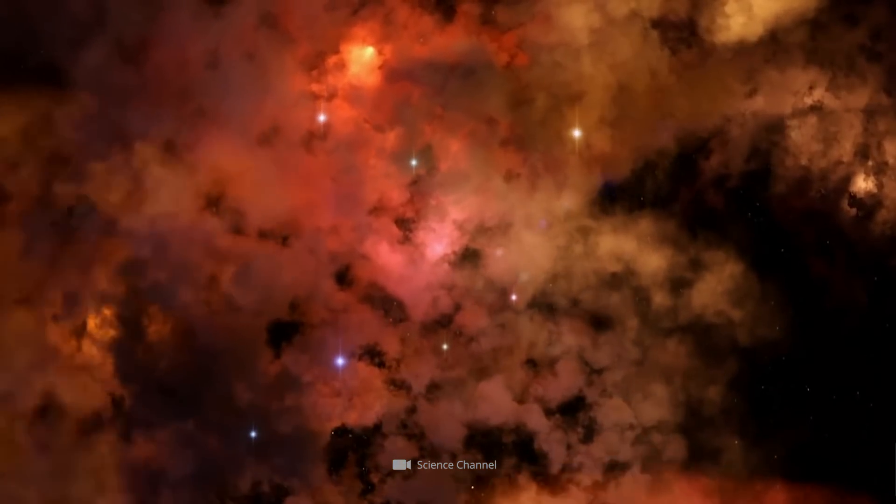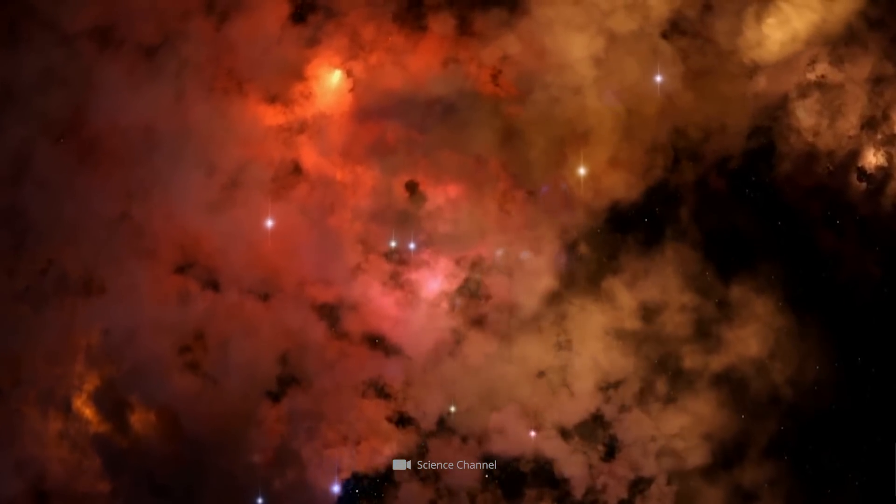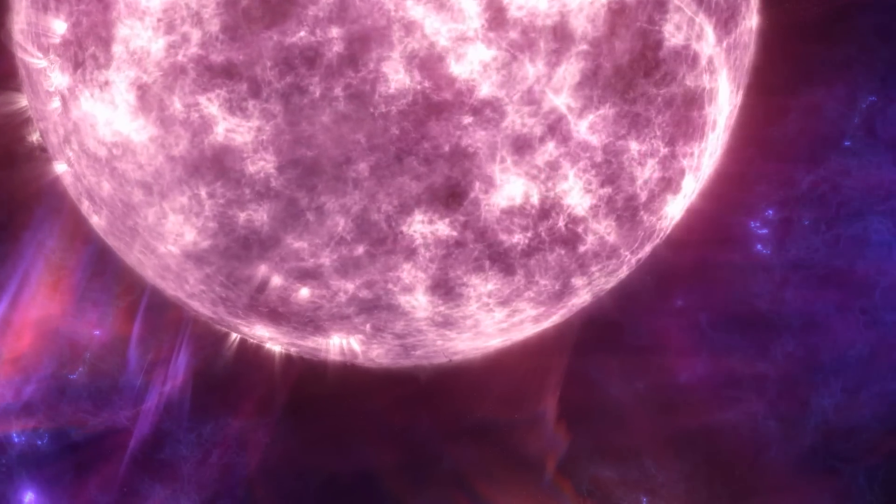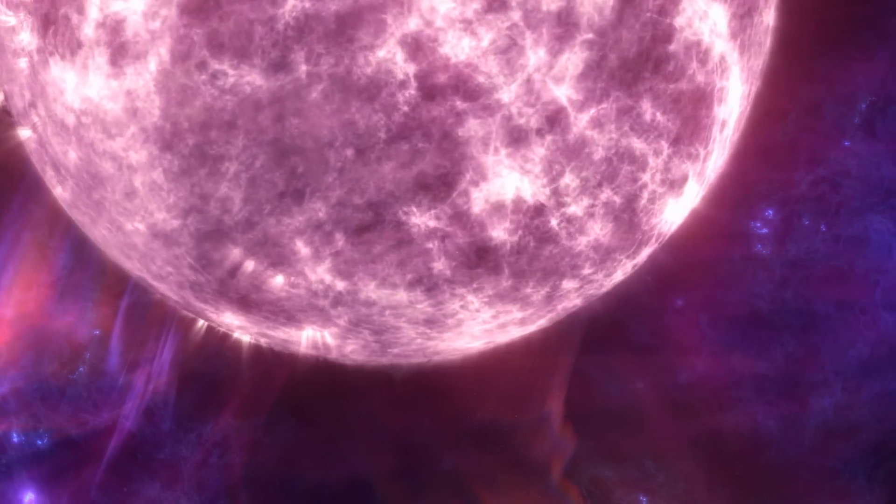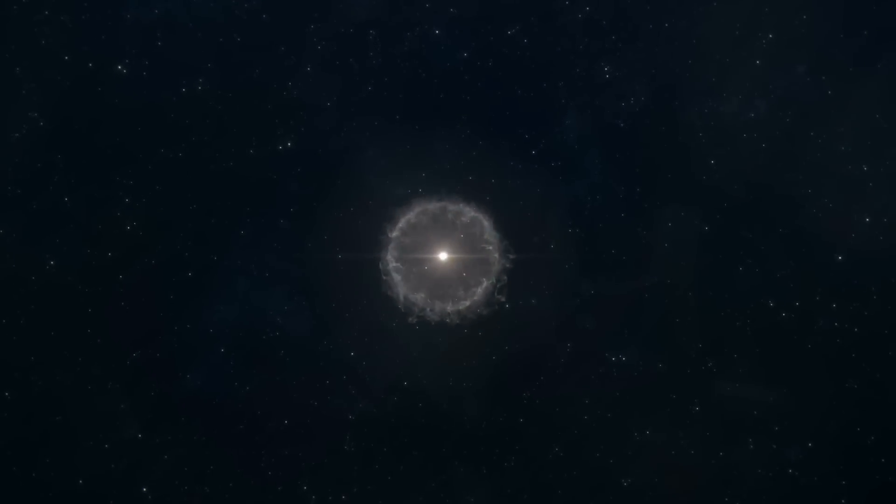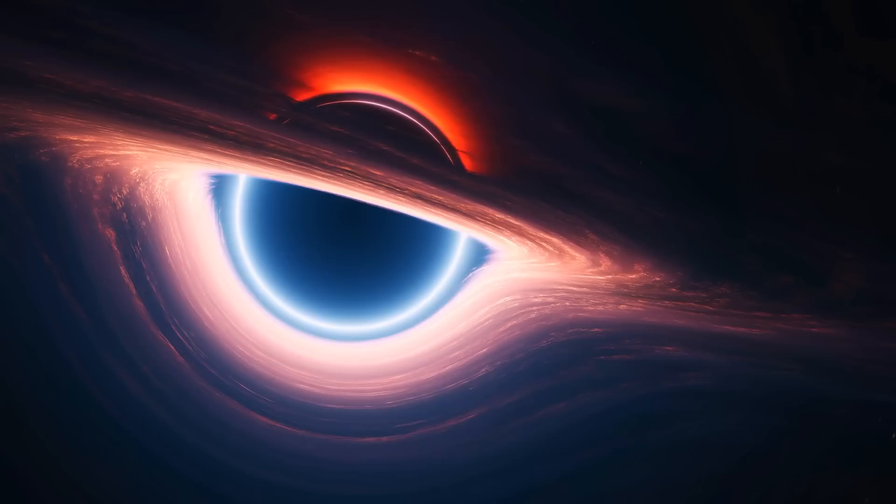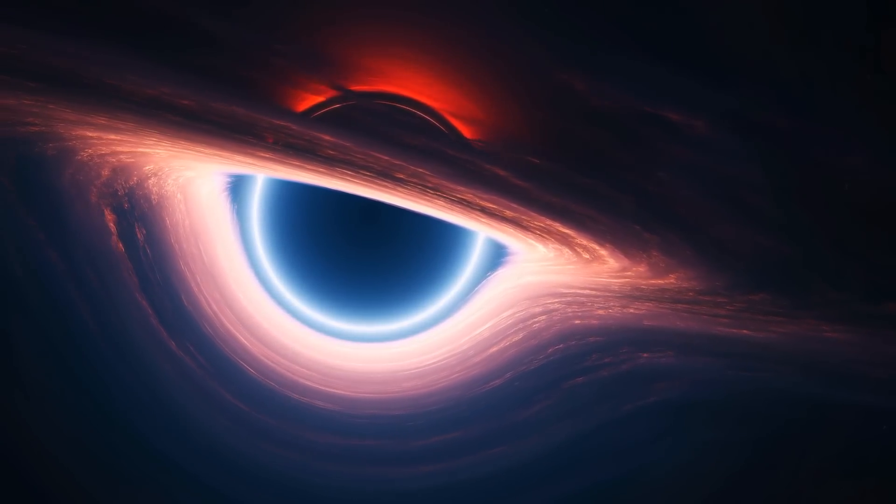The first stars were formed just a few hundred million years after the Big Bang, in an era that is almost unimaginably distant and mysterious. Scientists refer to these massive stars as population 3 stars. Presumably, these stars did not live very long and died in huge supernova explosions. They may have left behind the first black holes in the universe.